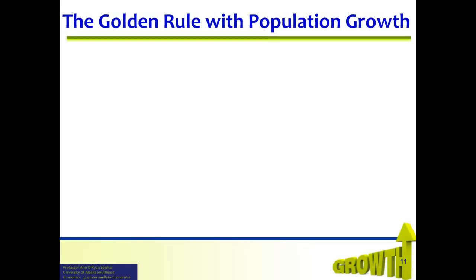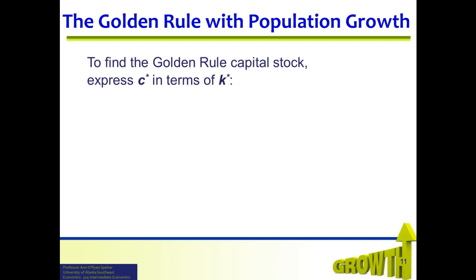Now we must find the golden rule capital stock with population growth. To find the golden rule capital stock, we express c-star in terms of k-star. Consumption at steady state, c-star, equals total income minus whatever is invested. That is, c-star equals f(k-star) minus (delta plus n) times k-star. We assume we are at steady state, and at steady state, investment equals break-even investment, which equals (delta plus n) times k-star.